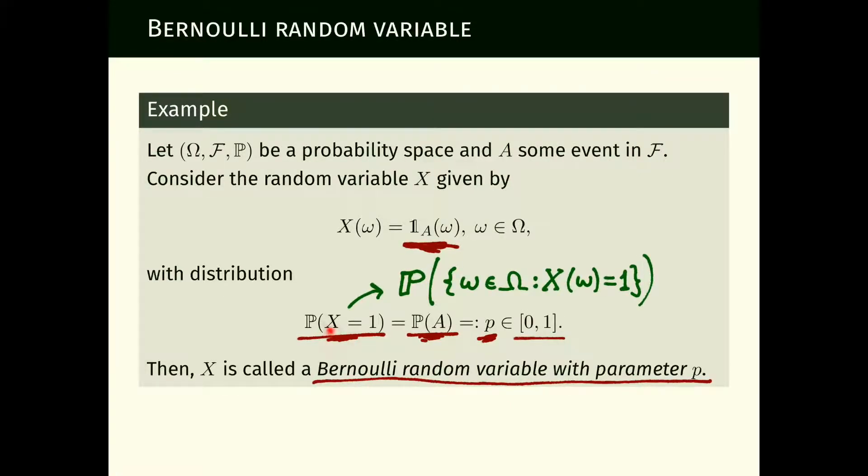Just for avoidance of doubt, we use this standard notation. When we write P of something, we're talking about the probability that this condition occurs. To be absolutely precise, it's the probability of the set of little omega for which x of that omega equals one. But we don't bother writing all this each time; we write this and it's understood what it means.